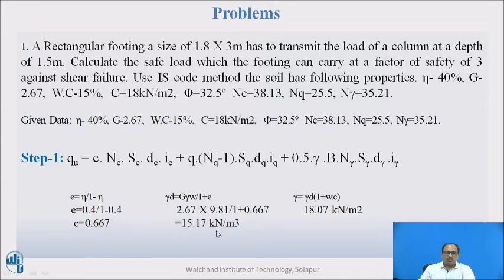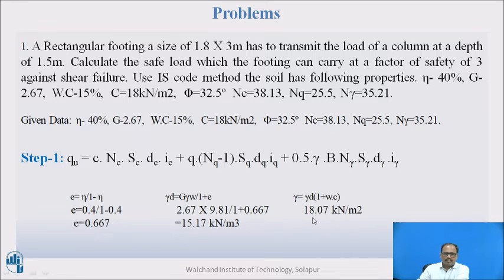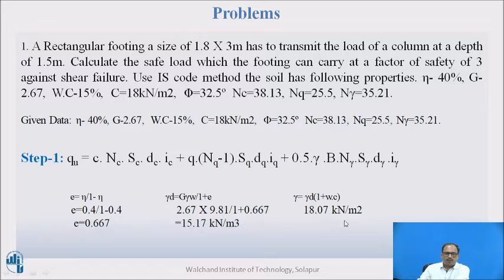This gives γd = 15.17 kN/m³. Substituting into γ = γd × (1 + w) with water content w = 0.15, we get the unit weight of soil γ = 18.07 kN/m³.